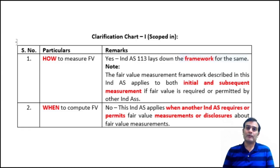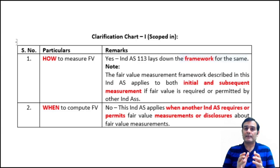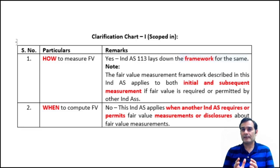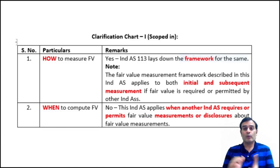Ind AS 113 gets triggered only when some other Ind AS tells you to calculate a fair value. Generally, whenever any Ind AS uses a reference to fair value — except in a few cases which we'll see in scope — we need to compute the fair value as per Ind AS 113. For example, when you look at Ind AS 16, Ind AS 38, or Ind AS 40 in terms of disclosure of fair value, Ind AS 113 gets triggered. So Ind AS 113 deals with how to measure fair value, but not when — that is covered by the other Ind AS.